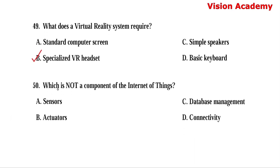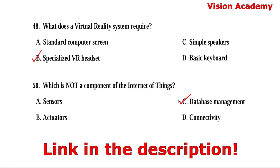Question number 50. Which is not a component of the internet of things? Option A: Sensors. Option B: Actuators. Option C: Database management. Option D: Connectivity. Here, option C, database management, is the right answer. I hope you understood all of these questions with answers. If yes, please type yes in the comments. The link to all these questions is in the description below. Thank you.